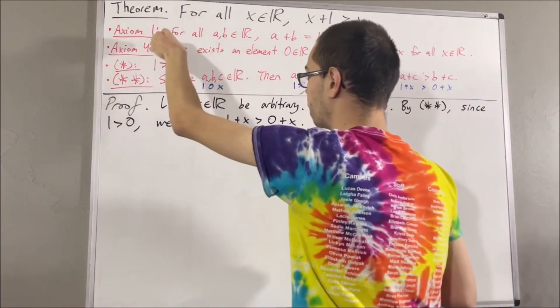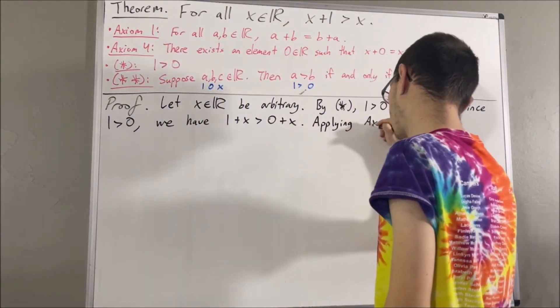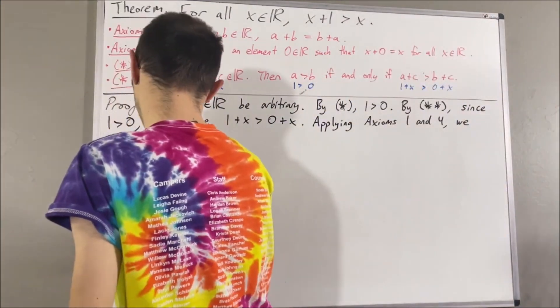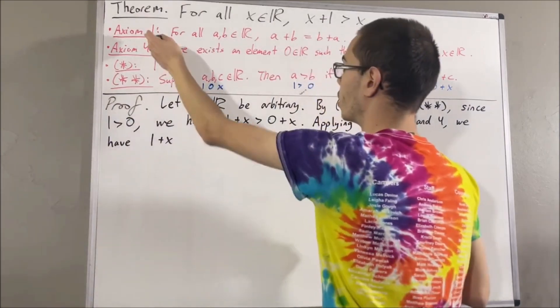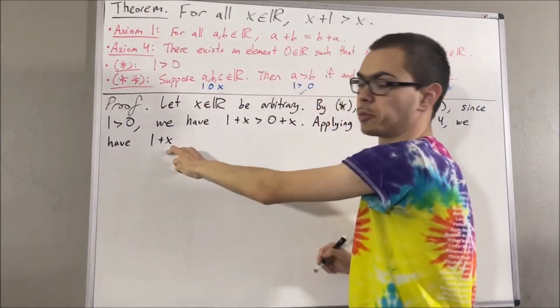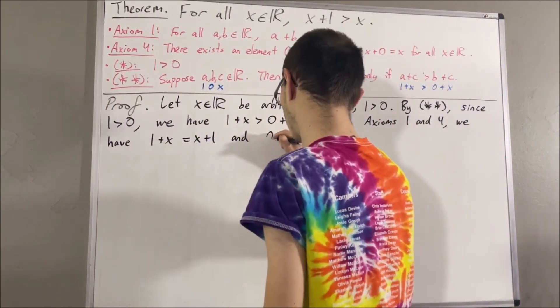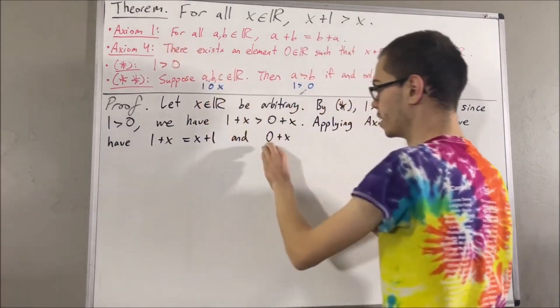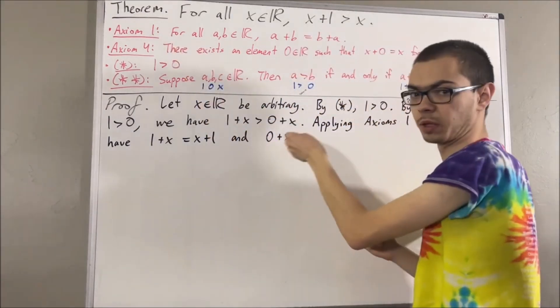So, applying axioms 1 and 4. First of all, by axiom 1, 1 plus x is equal to x plus 1. And by axiom 1, 0 plus x is equal to x plus 0.